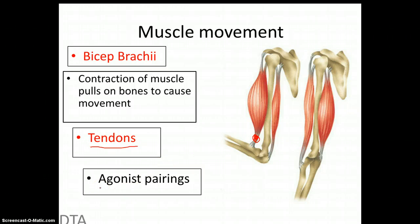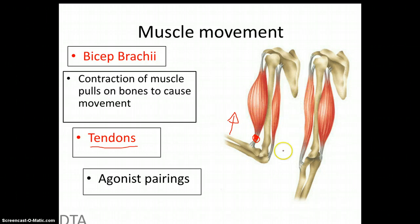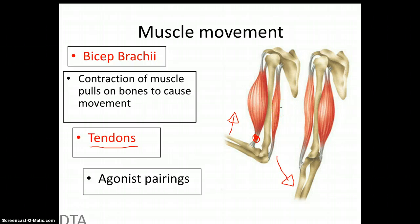Another thing to identify is agonist pairings. This means that muscles work in pairs. In this situation you have your bicep and your tricep working together — whilst one is contracting the other one is relaxing. To raise our arm, the bicep brachii contracts, pulling the arm upwards, whilst the tricep is relaxing. If we lower the arm the other way, the bicep is relaxing and the tricep is contracting. We'll look in more detail about how that's not always strictly the case.